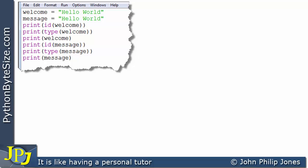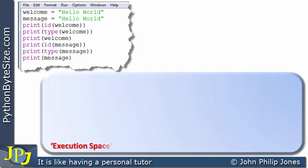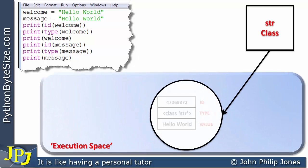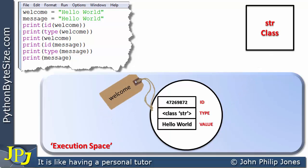Now if we map that onto the model we've been using so far in this particular playlist, what we will have is an execution space, we'll have a string class, and from the string class will produce an object and we label it with the word welcome, as you can see here. This object, like all the other ones we've looked at, is going to have an ID, it's going to have a type, and in this particular case the value is going to be hello world.